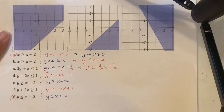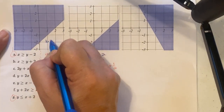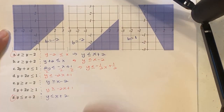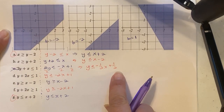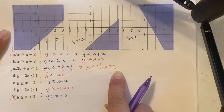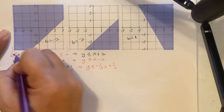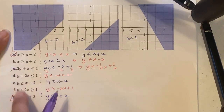Now we figure out which equations match our graphs by eliminating options. The graph starts at negative 2, so the b value is negative 2. We can eliminate C because it has a b value of about 1 to 1.5, eliminate G because b is positive 2, and also eliminate A because it's also positive 2. That leaves us with B, D, E, and F to match.